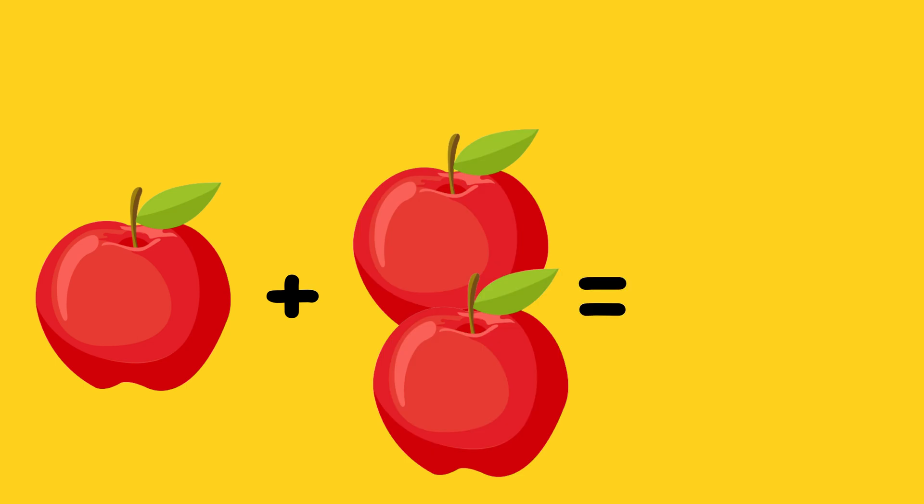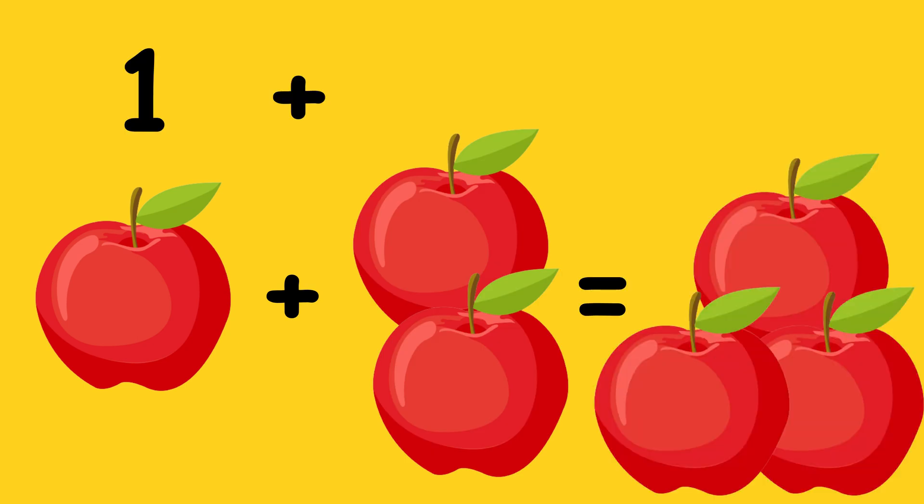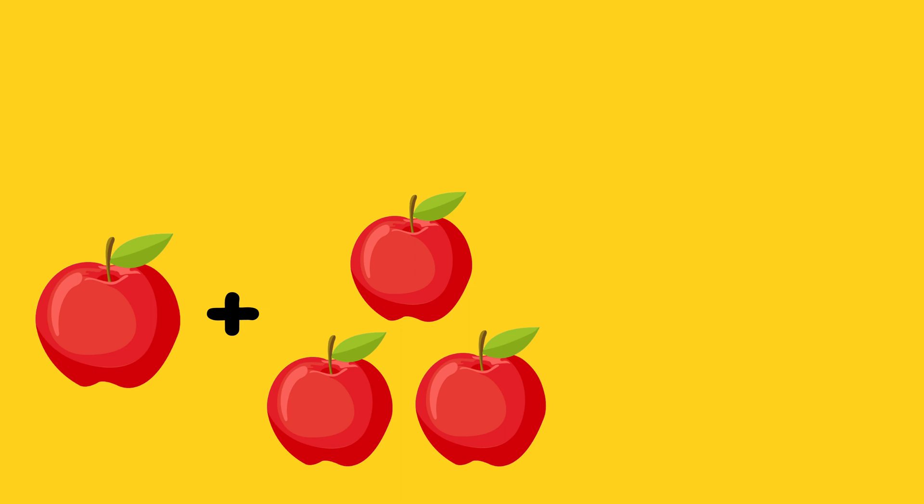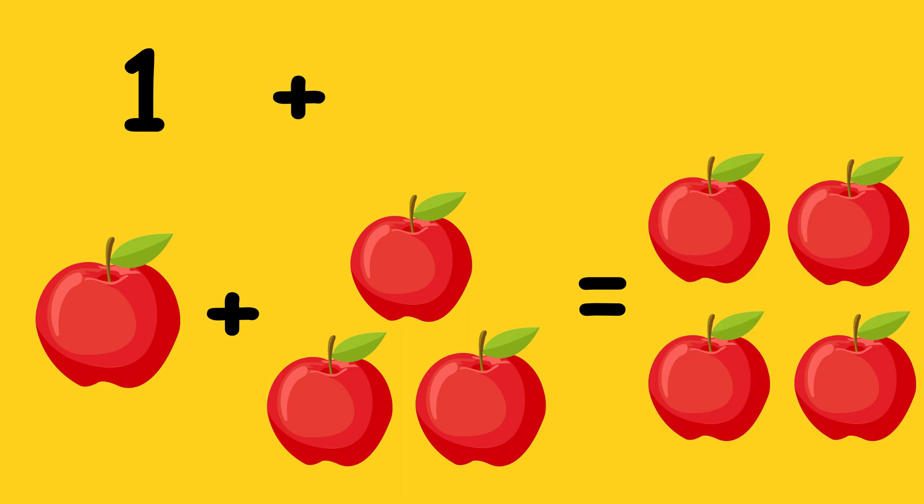Now we have one apple plus two apples equals three apples. One plus two equals three. Now we have one apple plus three apples equals four apples. One plus three equals four.